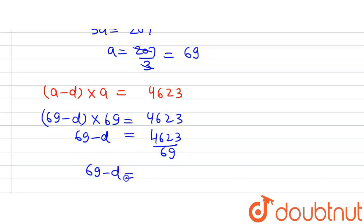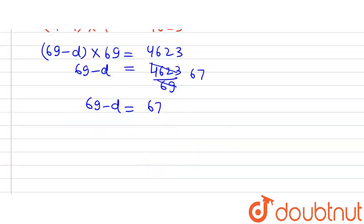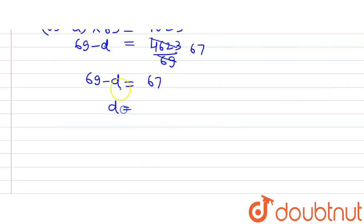On solving it, we will get 69 minus D is equal to 4623 divided by 69 will be 67. So on solving it further, we will get D is equal to 69 minus 67 which will be equal to 2. So we have D is equal to 2.